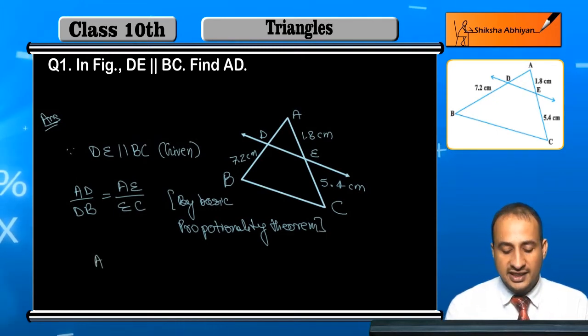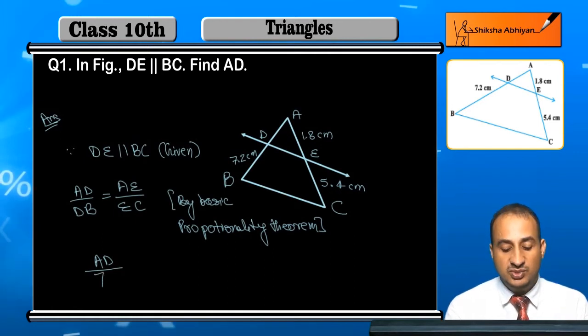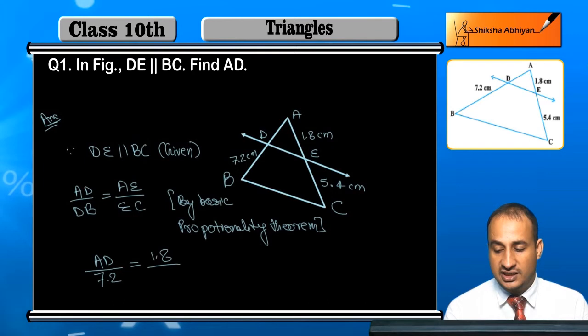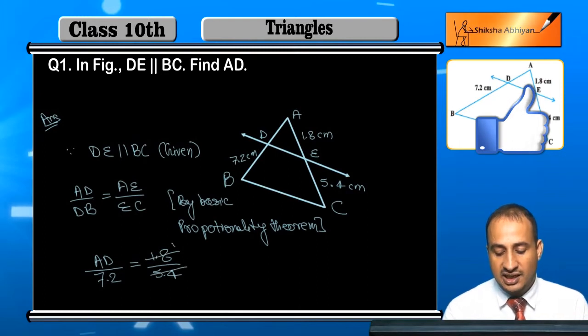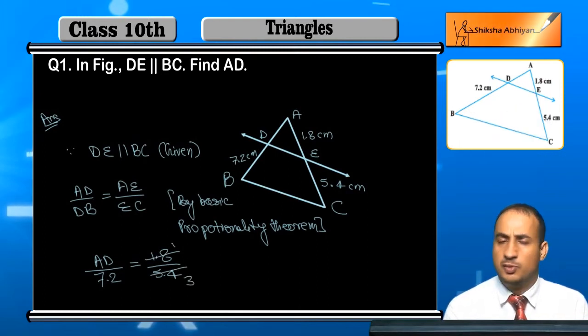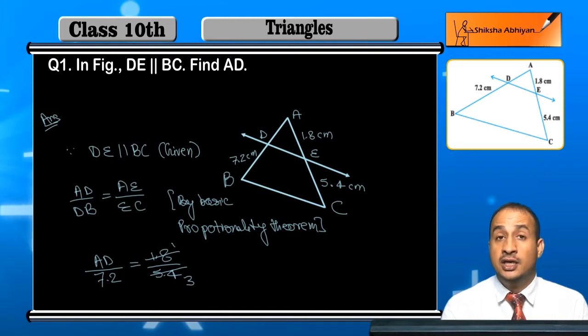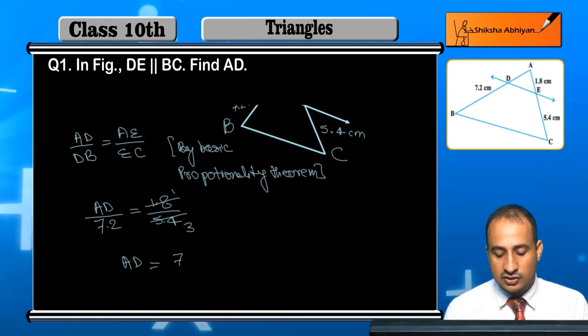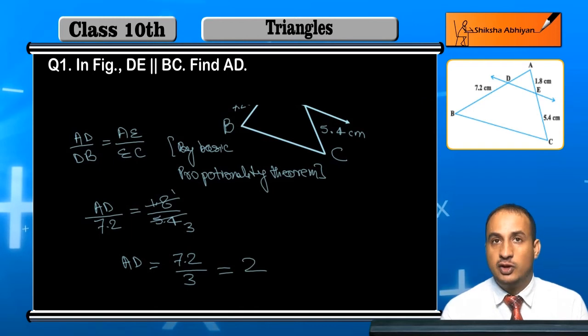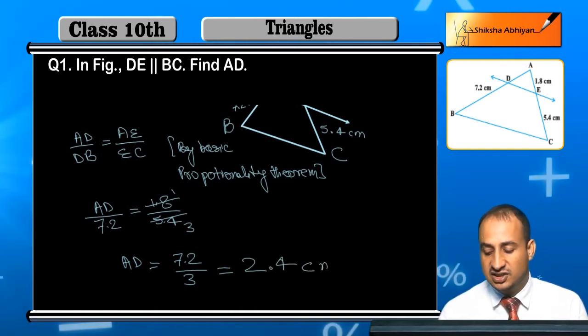Now you have to find AD. We know that DB is 7.2, AE is 1.8, and EC is 5.4. Now 1.8 and 5.4 - this is simply 3 times, so I will write it as 18 by 54, which will be 1 upon 3. Now 1 upon 3 is here, so AD is equal to 2.4. How? 7.2 divided by 3 - when I divide 3 into 6, I get 2, and 1.2 divided by 3 is 0.4. So AD is 2.4 cm.